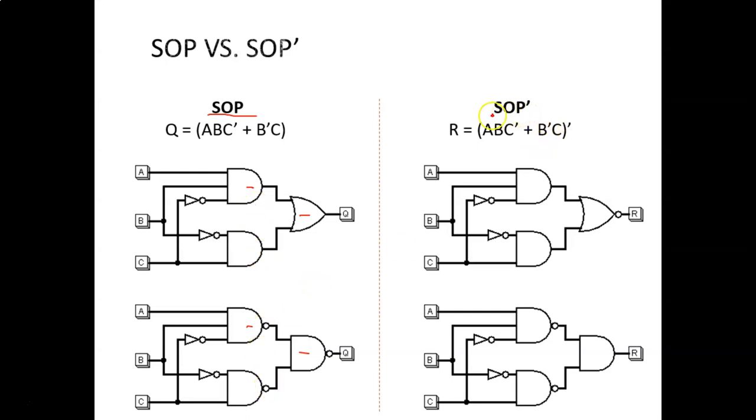If I want to do an SOP invert orientation, what do we do? We take the SOP and throw a bubble at the end, so that becomes an AND NOR. Or similarly, I could have a NAND NAND implementation and complement it by removing that bubble. This leaves me with a NAND AND two-level circuit.